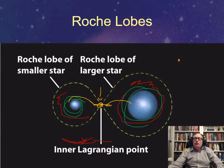So you could for example have a little star and a big star, and the little star would have a little bitty Roche lobe and the big star would have a big Roche lobe.